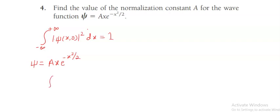So integration from minus infinity to plus infinity. Note that the region of x is not mentioned, so that is why the region of x is minus infinity to plus infinity. The mod psi square can be written as psi star into psi dx, so this is equal to integration from minus infinity to plus infinity.